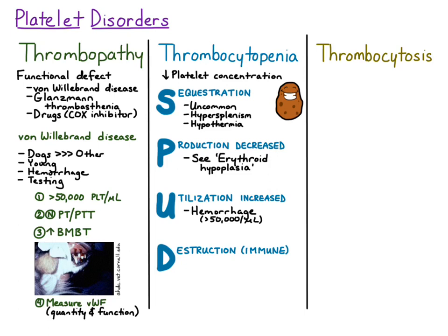If the platelets are less than 50,000 per microliter, you have to look for another cause. A second cause for increased utilization is disseminated intravascular coagulation, or DIC. This is when fibrin-platelet clumps form within the vasculature system throughout the body — disseminated means throughout the blood vessels, intravascular means within the blood vessels, and coagulation means blood clots are forming within the vasculature. With DIC, you would expect to see prolonged PT and PTT, which are tests of secondary hemostasis.